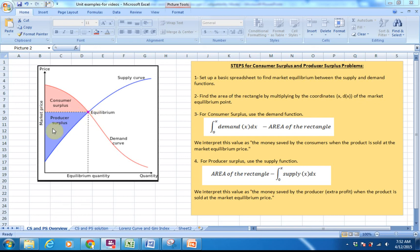For consumer surplus, we're going to set up the integral from zero to the x value that we found in market equilibrium. We're going to anti-differentiate our demand function. This will give us a value, and then we're going to subtract the area of the rectangle. Essentially, I'm taking the area under the demand curve and subtracting out the area of the rectangle. This is interpreted as the money saved by consumers when the product is sold at the market equilibrium price.